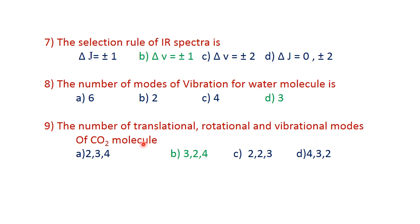The number of translational, rotational, and vibrational modes of CO2 molecule: CO2 is linear with N equals 3, so it has 3N-5 vibrational modes. Translation modes: 3, rotational modes: 2, vibrational modes: 4. Option B is correct.